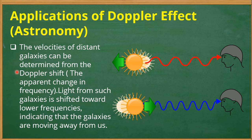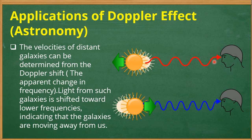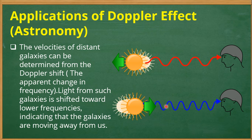To understand the Doppler effect in astronomy, consider a star moving away from an observer on Earth. The light waves emitted from that star will have decreasing frequency and increasing wavelength as they reach us. In the visible spectrum, the longest wavelength corresponds to the red color, so when a star is moving away, we observe a red shift.